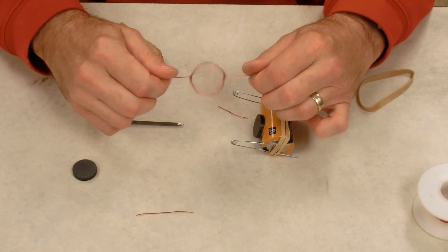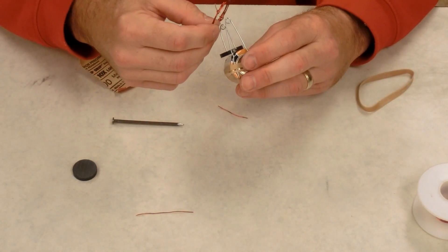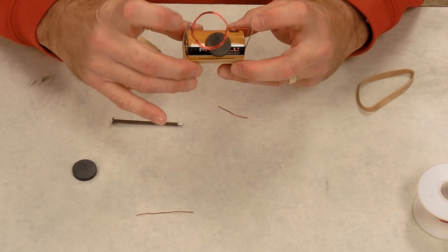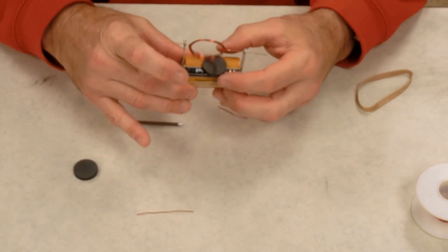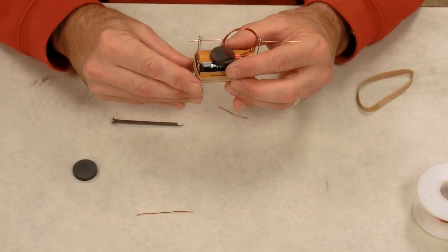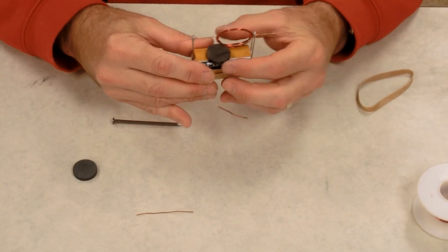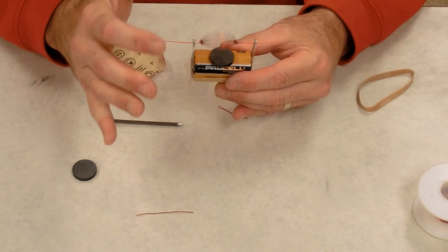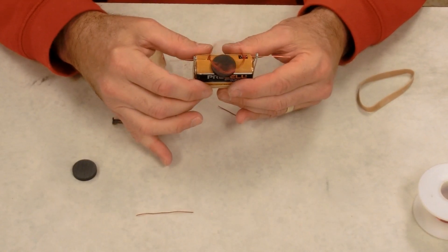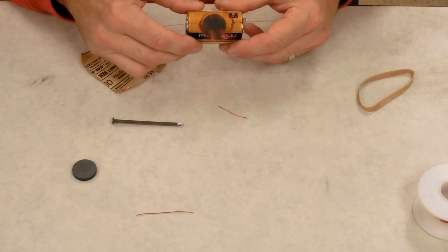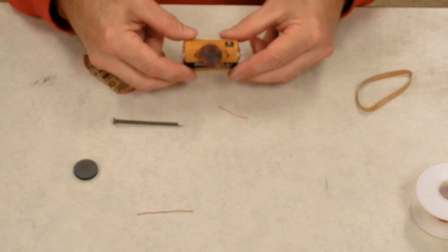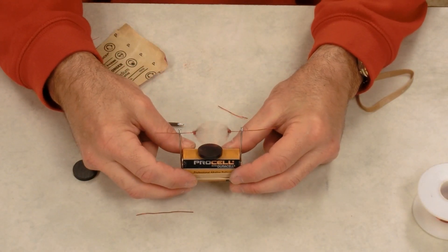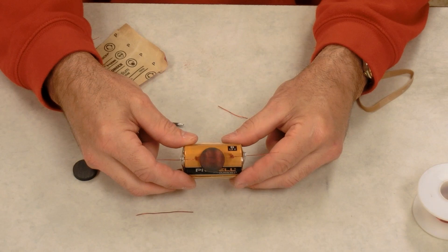So whenever that part that's scraped makes contact with our paper clip, we'll have current flowing through the loop. So I try to get it balanced as best as possible. I place it in between the two paper clips. I want to move my loop close to the magnet but not touching. The magnetic field is stronger when it's closer. Sometimes it'll start spinning right away. Sometimes you got to give it a little bit of a kick to get it going. But here you have it.